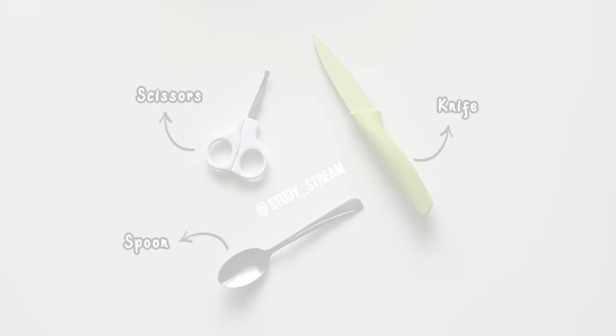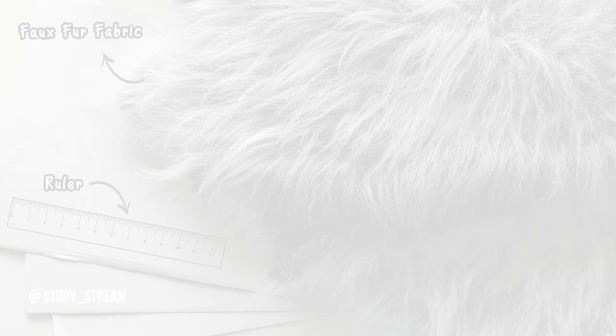Paper towels and cardboard sheets, knife, scissors and a spoon. Small piece of faux fur fabric, this is optional for veterinary students to simulate a furry patient. Last but not least, a ruler.